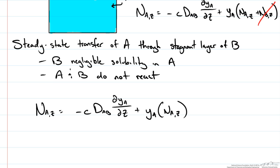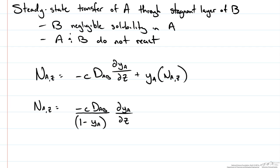But we want to rearrange this into a Fick's law form and bring our flux term onto one side. When we do this we're going to have 1 minus YA, the mole fraction of A in the gas stream, in our denominator. So this term accounts for the bulk flow effect.